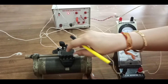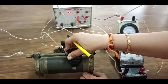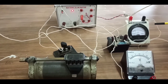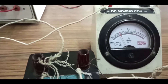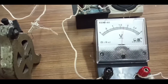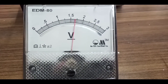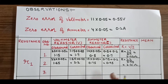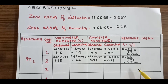Now to take the second reading, I will again adjust the position of the rheostat. I have adjusted the rheostat so that the ammeter reading is 15 divisions and corresponding to it the reading of the voltmeter is 33 divisions. The calculation for the second observation gives a resistance value of 2.31 ohms.